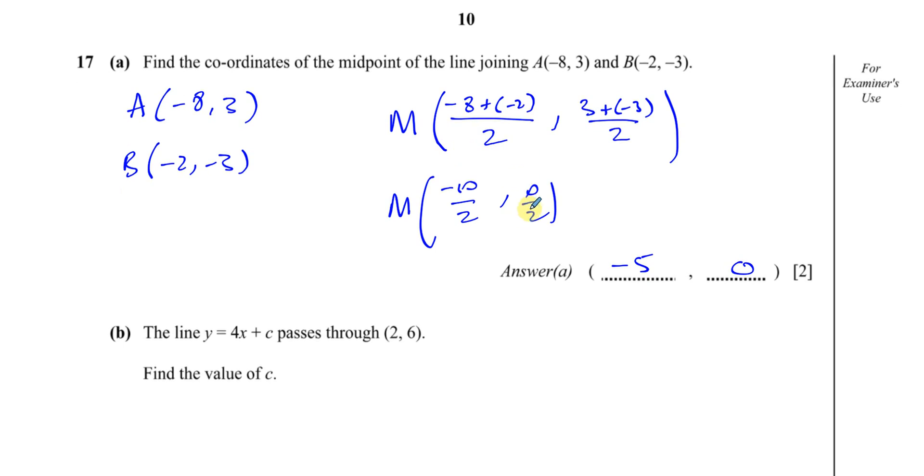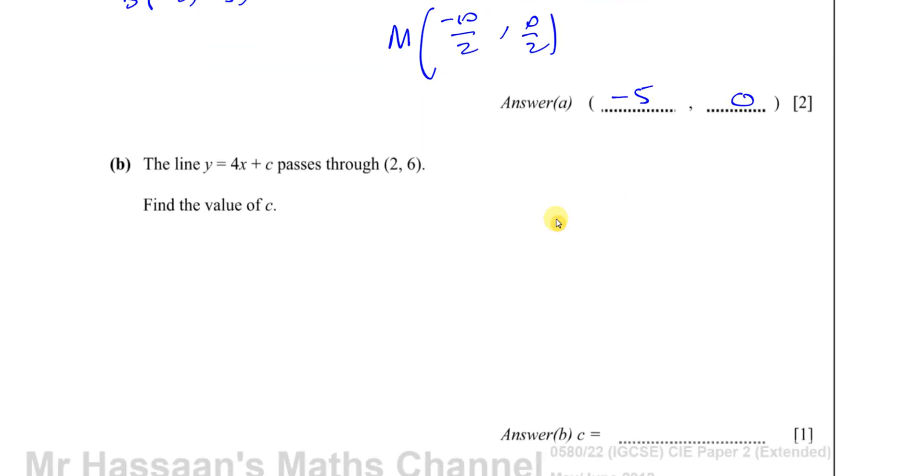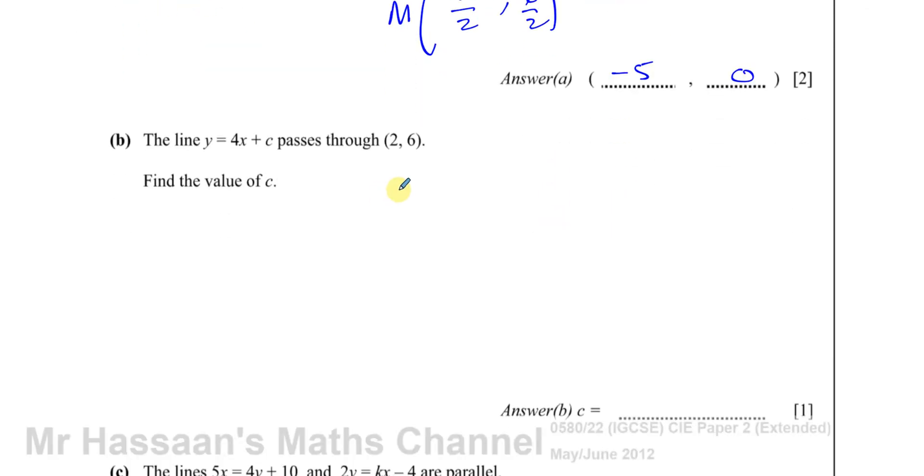Then part B says the line y = 4x + C passes through (2, 6). Find the value of C. Well, you know that if this line passes through this point, these values of x and y satisfy this equation.